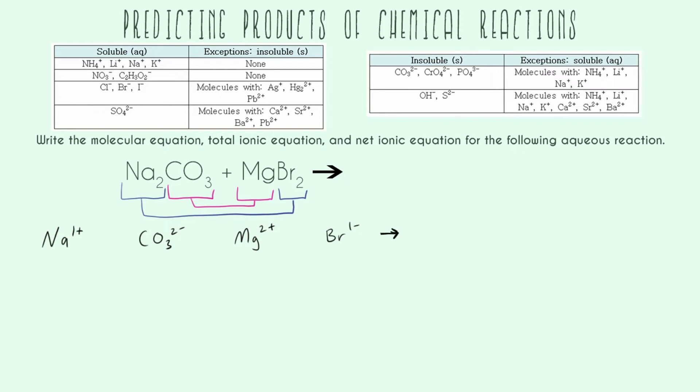The other way, and the reason that this actually happens, is because opposite charges attract. So we can see in our first example, sodium is positive, carbonate is negative. Magnesium is positive, bromine is negative. We only have one way to switch things.